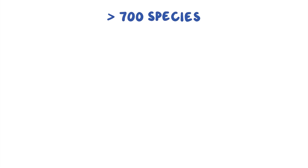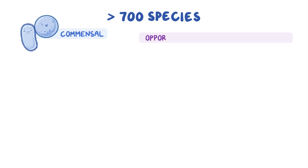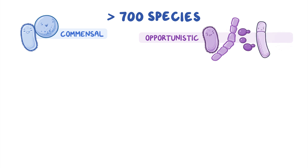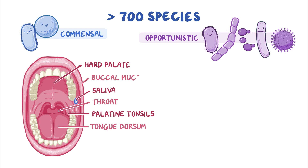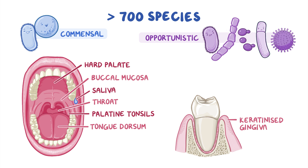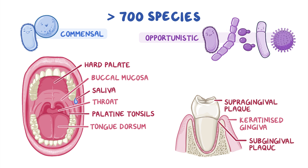The oral cavity contains over 700 microbial species as well as commensal and opportunistic bacteria, archaea, fungi, protozoa and viruses, which are organized into different microbial habitats, including the hard palate, tongue dorsum, saliva, palatine tonsils, throat, buccal mucosa, keratinized gingiva, supragingival plaque, subgingival plaque, lips and even dentures.